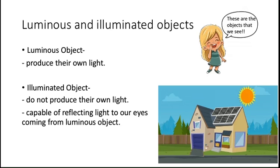Luminous objects are those objects which produce their own light — they have the ability to produce their own light. Can you think of an example? The first example that strikes your mind is the Sun. The Sun has its own light, so the Sun is a luminous object. Any object which produces its own light is one we are definitely able to see.